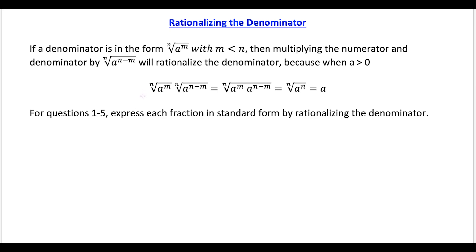What's up, I'm Vin, and today I want to show how to rationalize a denominator. So let's say we have an expression like the nth root of a to the m, where m is less than n and a is greater than zero.